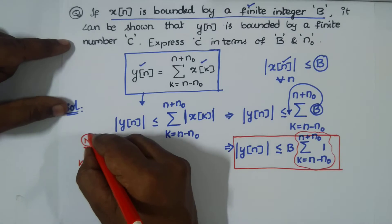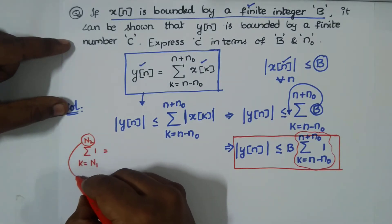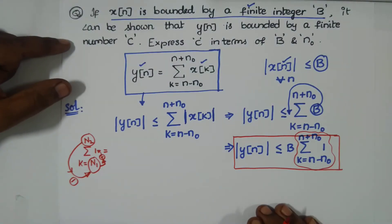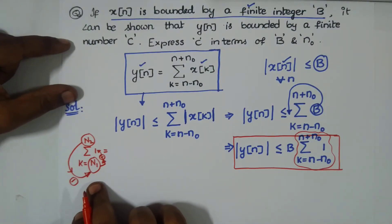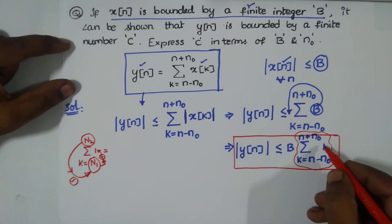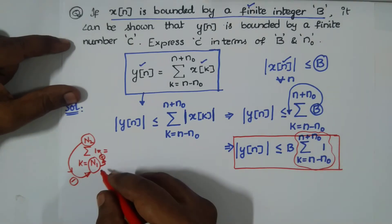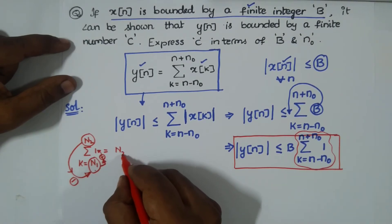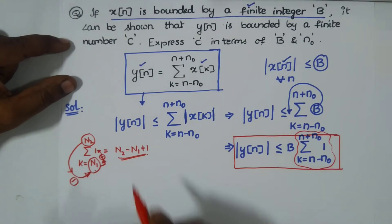Upper limit minus lower limit plus one. This technique is valid whenever we have 1 here. Upper limit minus lower limit plus one, so we have n₂ minus n₁ plus 1 as the answer. Similarly, you can check it out.